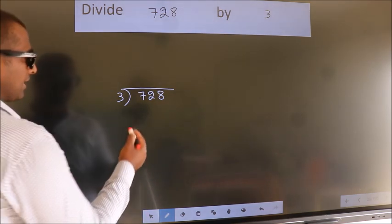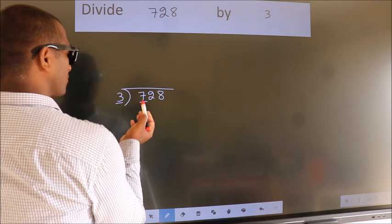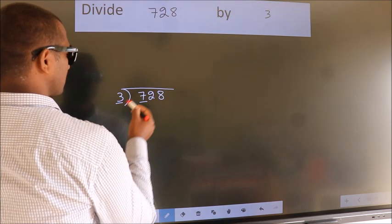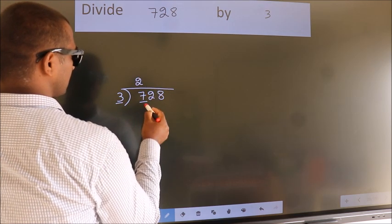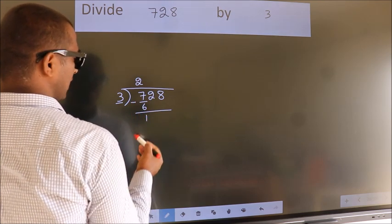Next, here we have 7, here 3. A number close to 7 in 3 table is 3 twos, 6. Now, we should subtract. We get 1.